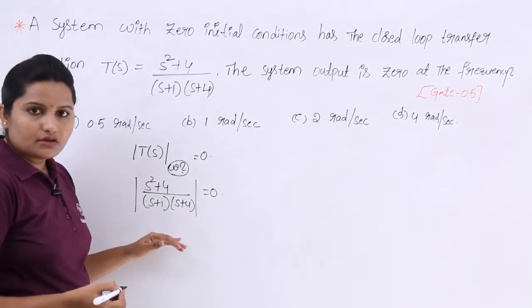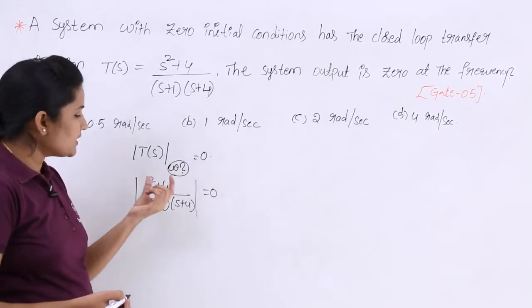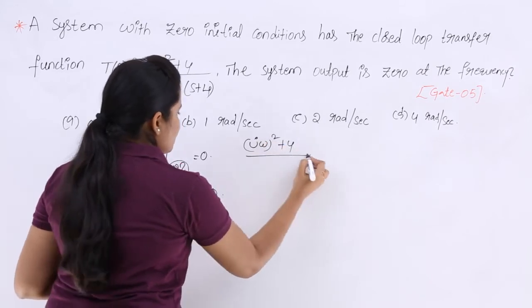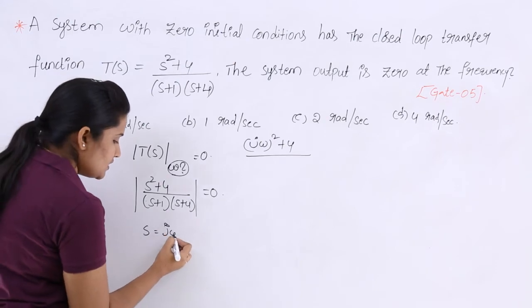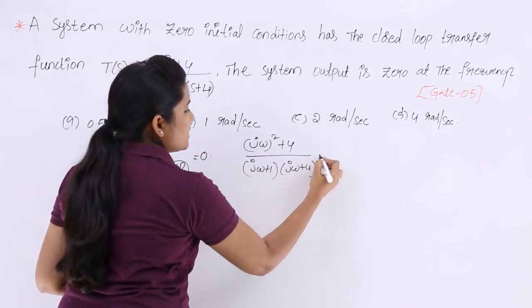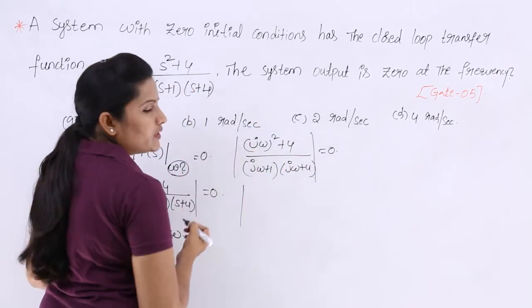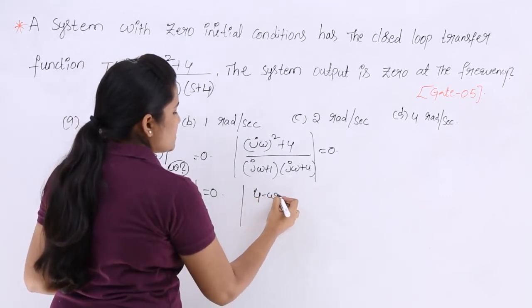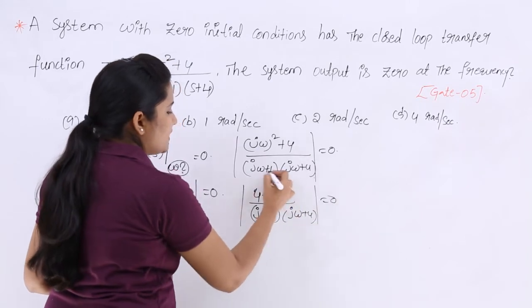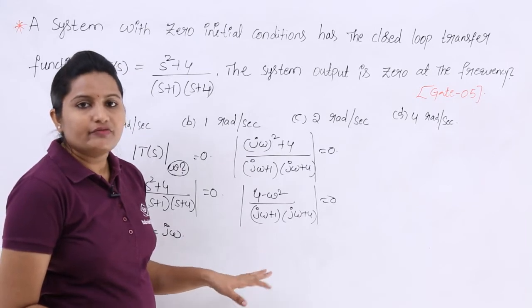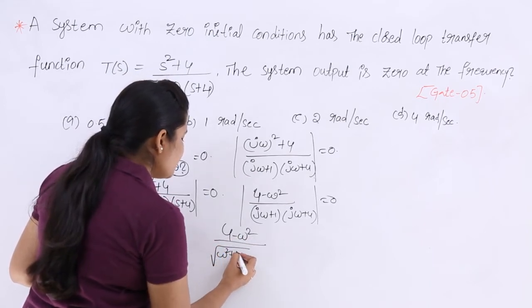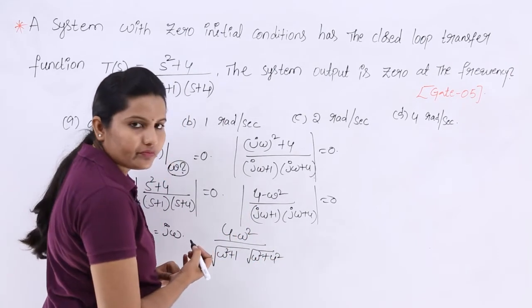When doing frequency analysis, it is better to convert into the omega domain. That is why I am substituting jω in place of S. So the numerator becomes (jω)² + 4, and the denominator becomes (jω + 1)(jω + 4), all set equal to zero. The numerator simplifies to (4 − ω²), which is a real value, and the denominator terms become √(ω² + 1) and √(ω² + 16) after taking the modulus.